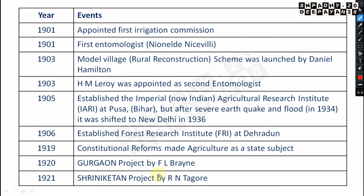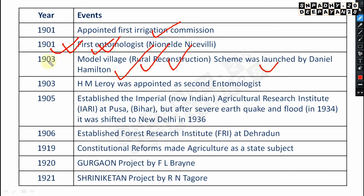From 1900 onwards, many very important things come. In 1900–01, the first Irrigation Commission was appointed — not that important. Very importantly, in 1901, the first Entomologist to the Government of India was Neonel de Niceville. In 1903, the Model Village Rural Reconstruction Scheme was launched by Daniel Hamilton — also important.